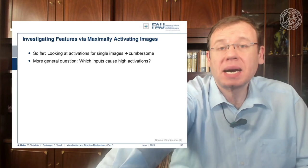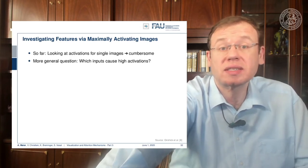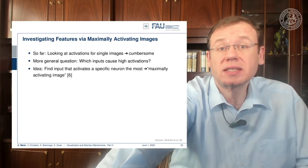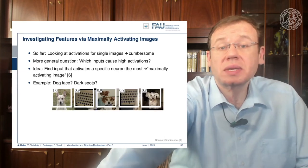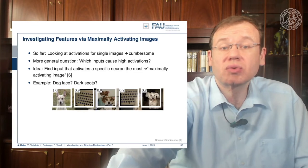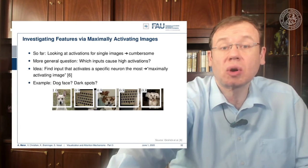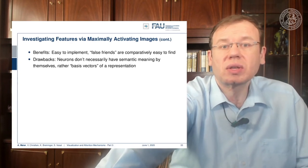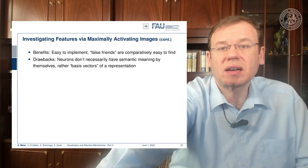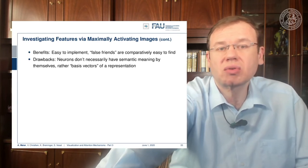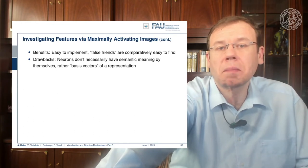Let's look into a third technique: finding the maximal activations of specific layers or neurons. The idea is that you look at the patches that have been shown to a network and order them by confidence in a specific neuron. What you can generate are sequences like this one — you can see this specific neuron was activated with values like 0.1, 0.9, 0.9, 0.8, 0.8, and these were the patches that maximally activated this neuron. You could ask whether this is a dog-face detector or a dark-spot detector, making it comparatively easy to find false friends. The drawback is that you don't necessarily get a semantic meaning — these form rather base vectors of representation.